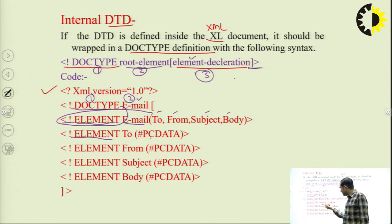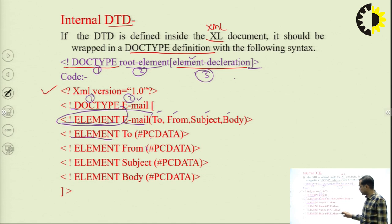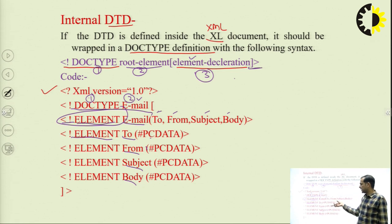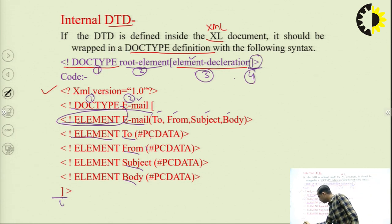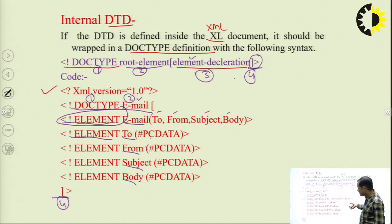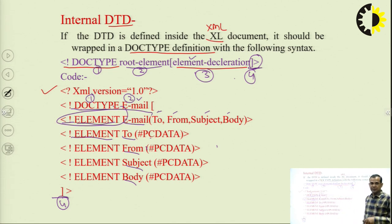Each element like 'to', 'from', 'subject', and 'body' is individually defined with PCDATA — parsed character data. This means the element contains text data. When this structure is placed inside the XML document itself, it is known as internal DTD.